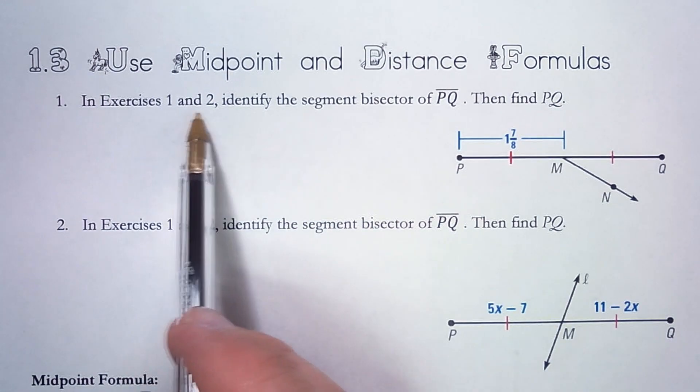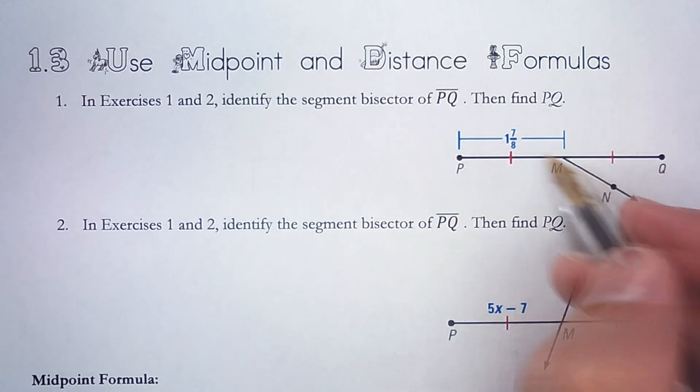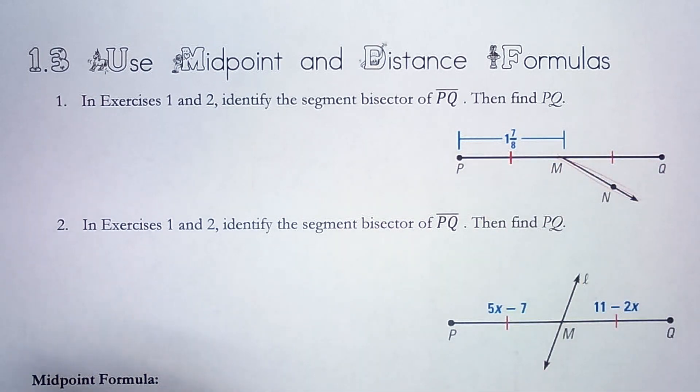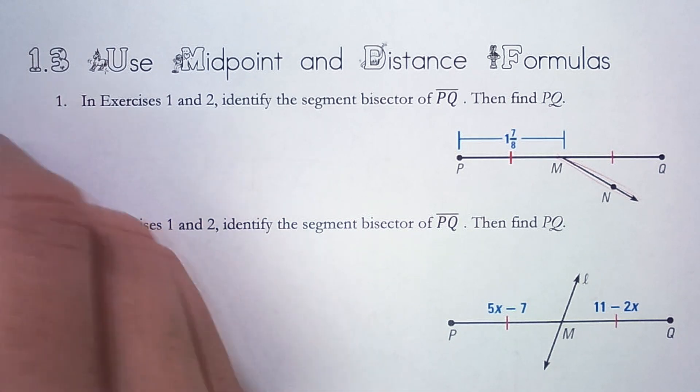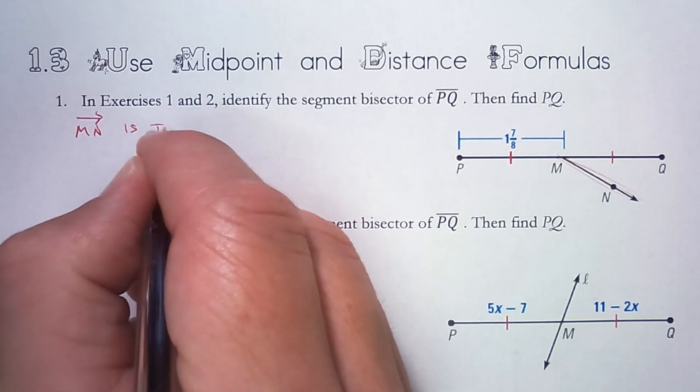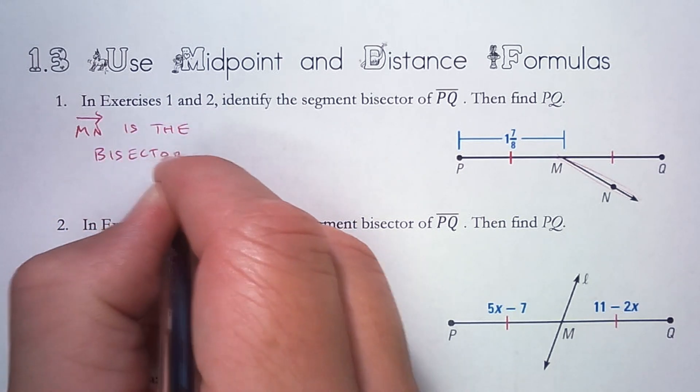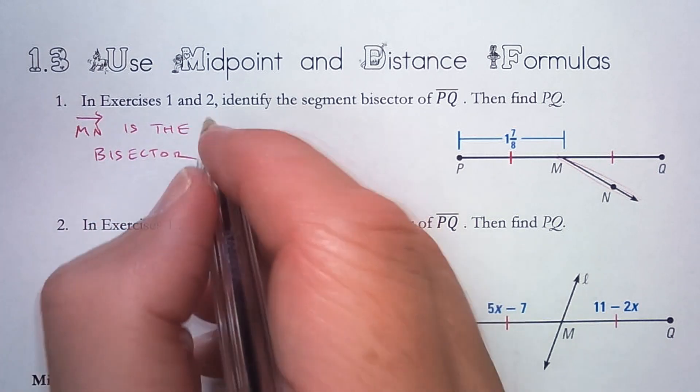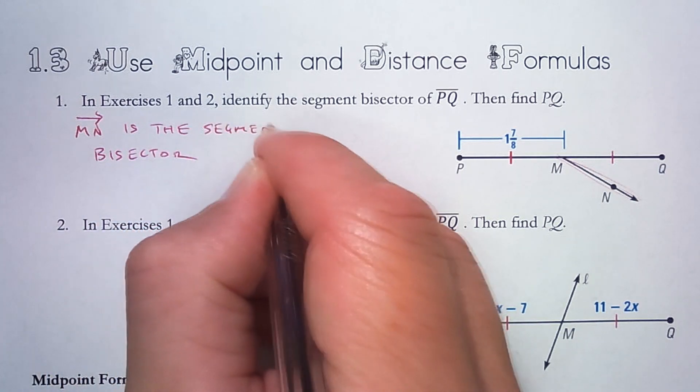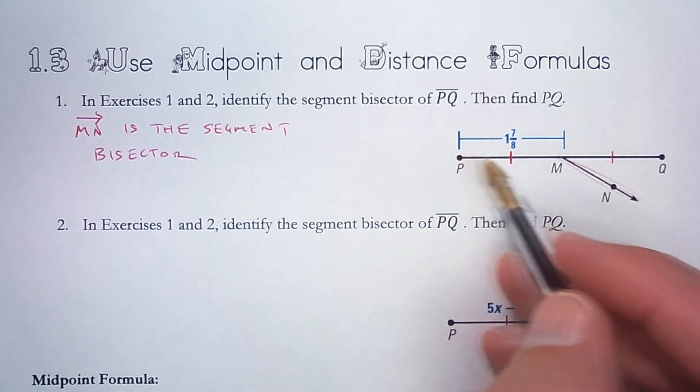Identify the segment bisector of PQ. So here's segment PQ. The bisector is right here. It is Ray MN. So Ray MN is the segment bisector. Find the length of PQ.